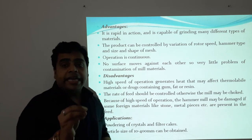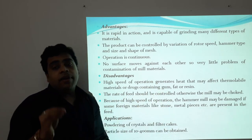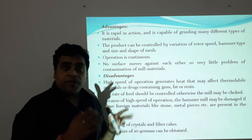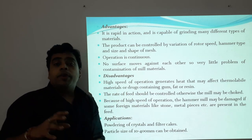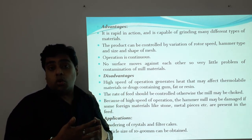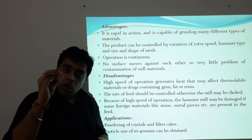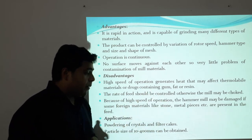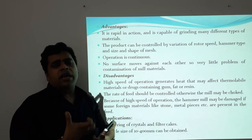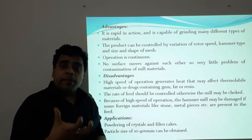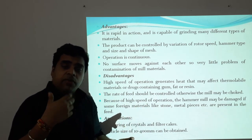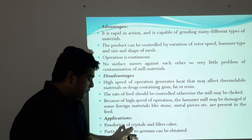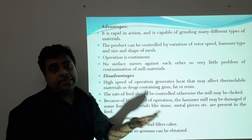The disadvantages: high speed operation generates heat, which can affect thermolabile products, particularly those containing gums, resinous, or fatty materials. The rate of feed should be controlled, otherwise the mill may choke or the screen may get clogged. Because of high speed of operation, the hammer mill may be damaged by impurities like stones or metal pieces, which can cut the edges of the hammers causing welling and tearing, resulting in contamination.